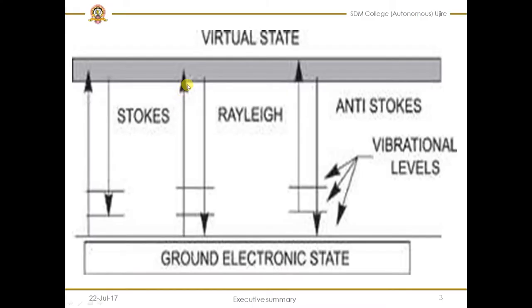In this picture we can clearly understand the formation of Stokes, Rayleigh, and Anti-Stokes lines. Here is the ground state and the excited state, and in the ground state there are different energy levels like E0, E1, E2, etc. Suppose the molecule present at the E0 level absorbs the photon and gets excited to the higher energy level, then returns to the same E0 level — there will be formation of a Rayleigh line, as the energy of the scattered light is similar to that of the incident light.